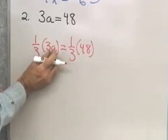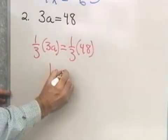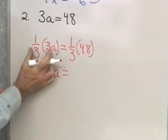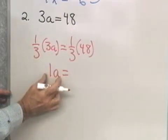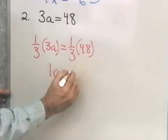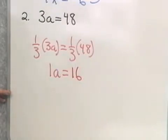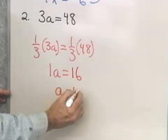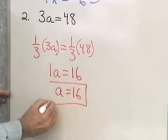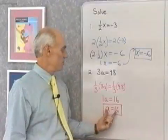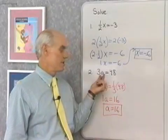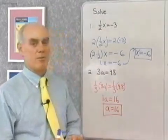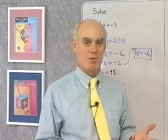1/3 times 3a is going to be 1a. I'll just write down the result: 1a. 1/3 of 48 is 16, so 1 times a equals 16, which is the same as a equals 16. That's true — if I substitute 16 for a in the equation, 3 times 16 is 48. I found the solution using the multiplication property for equality.